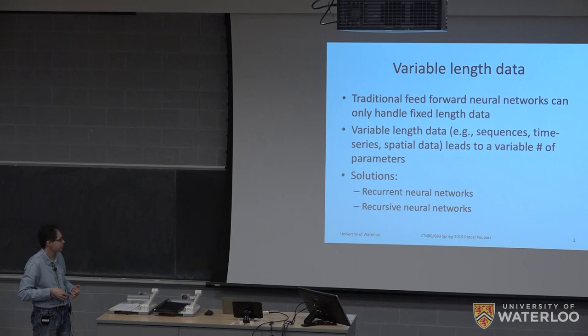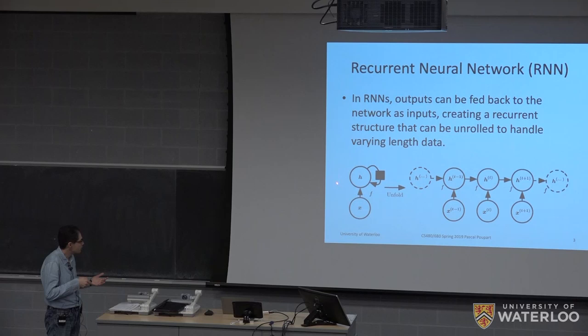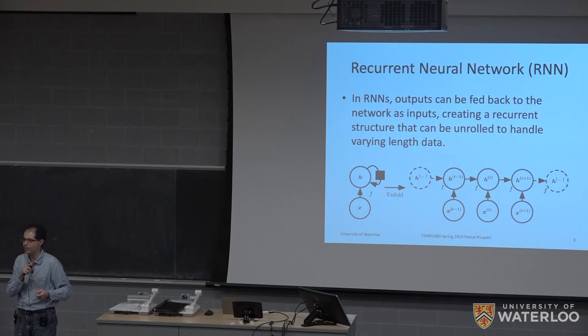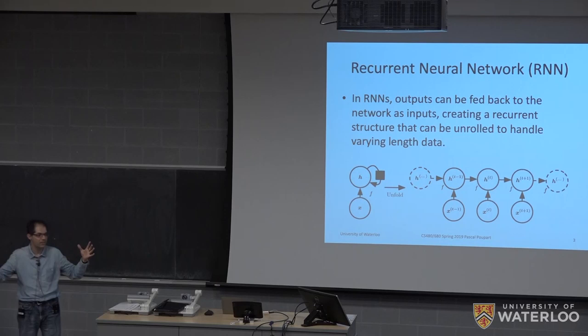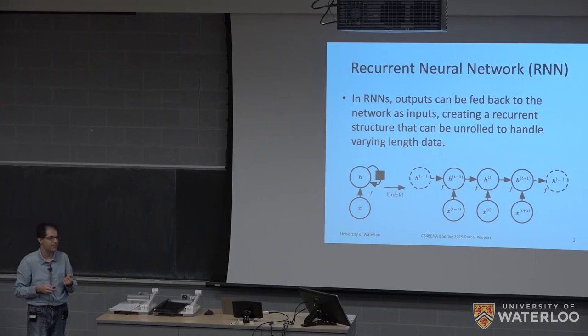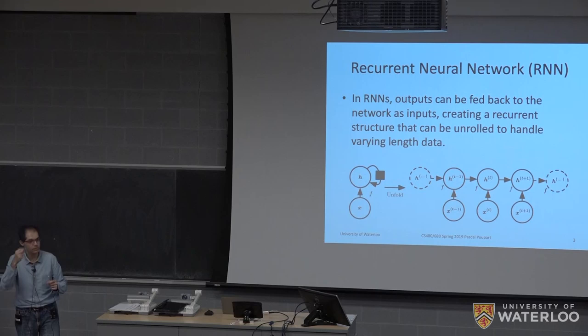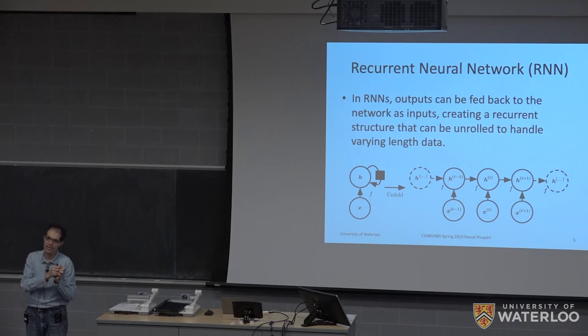A recurrent neural network is a neural network where some nodes are recurrent — the output of a node is fed back as input to that node, creating a cycle. It doesn't have to be just one node; several nodes can be involved. The most succinct way to represent it is with a template showing information flow, using a black square to indicate a recurrent arc.